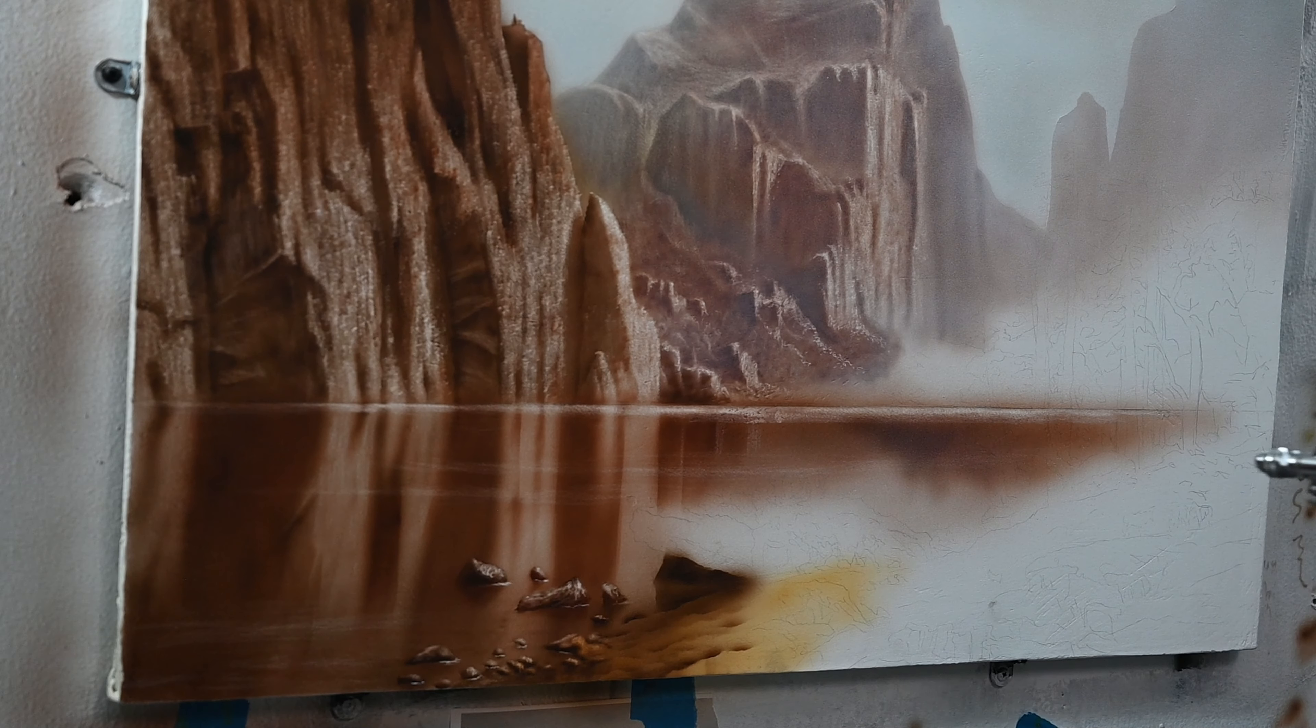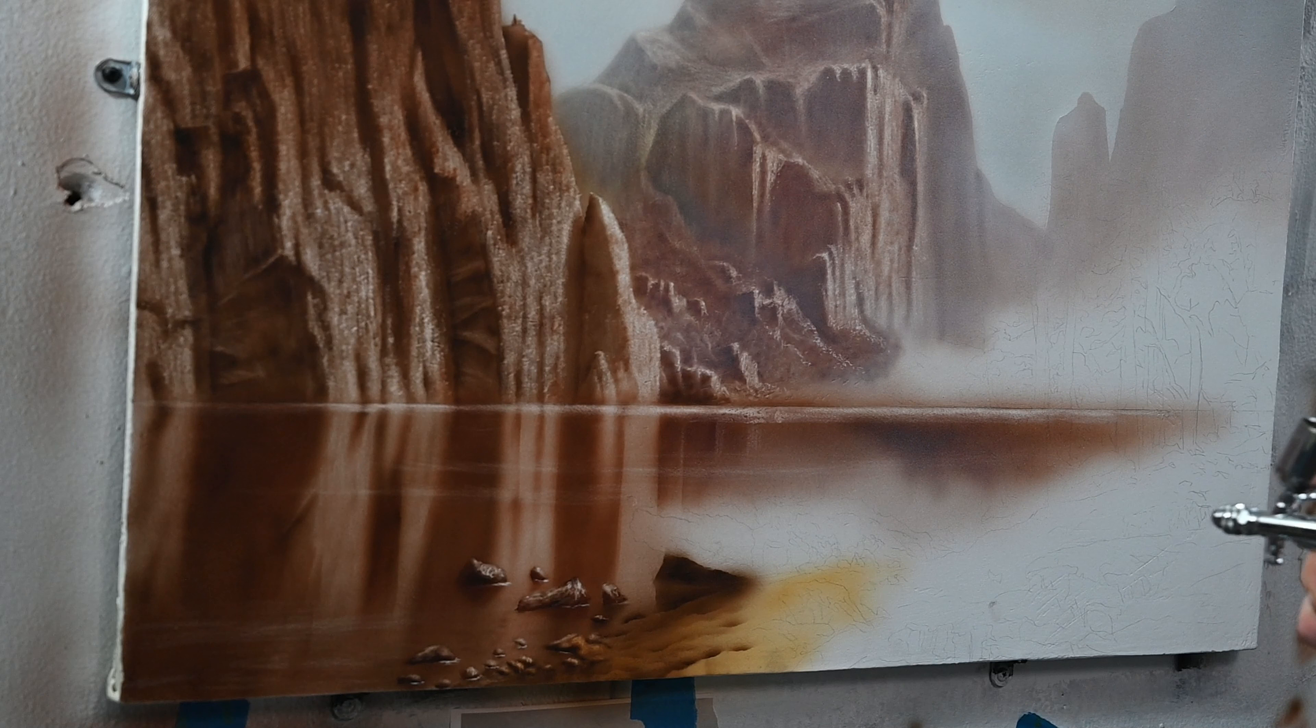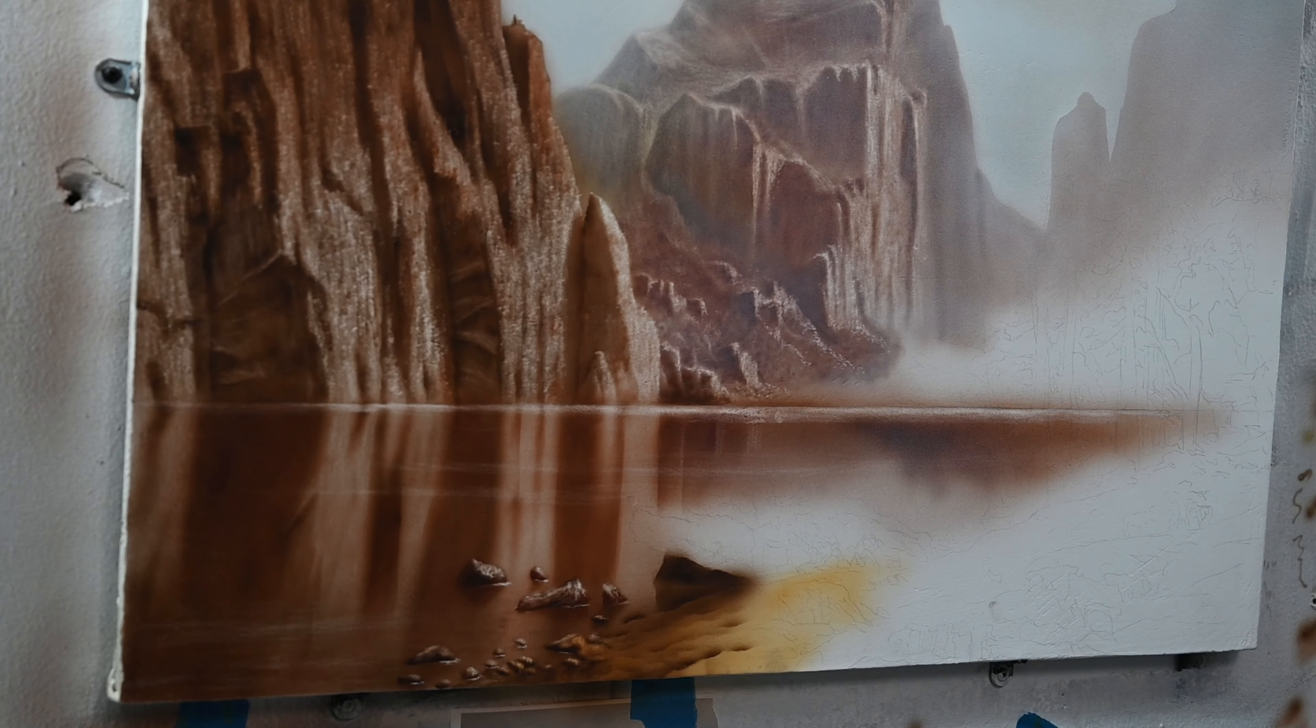Now I'm switching over to some opaque white right out of the bottle and I'm using this to stipple over the water which is going to give it that smoky effect and it's also going to shift the hue toward a bluish cooler tone.